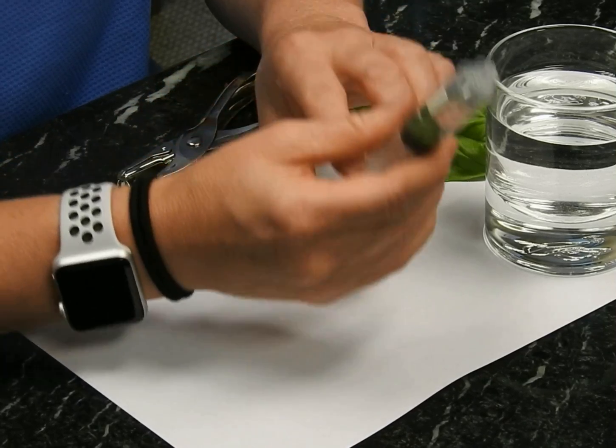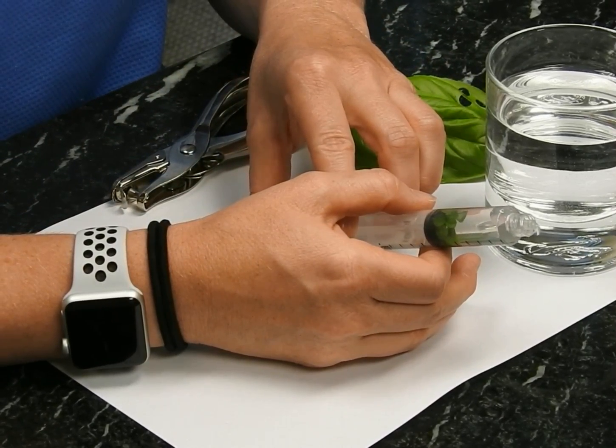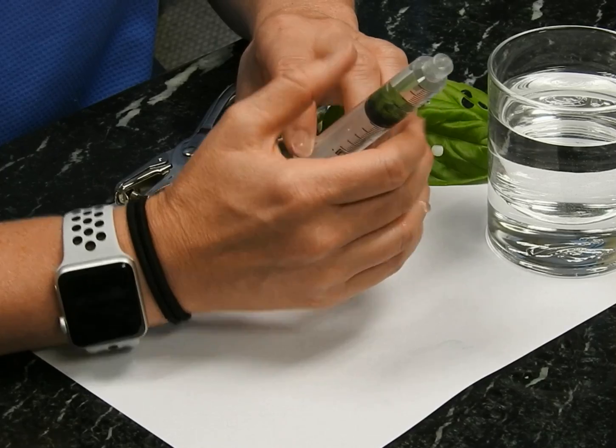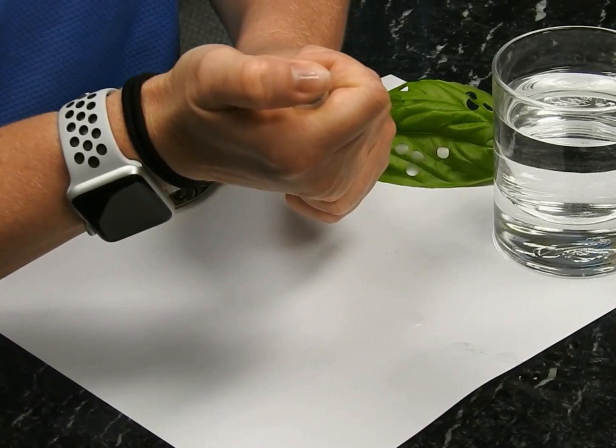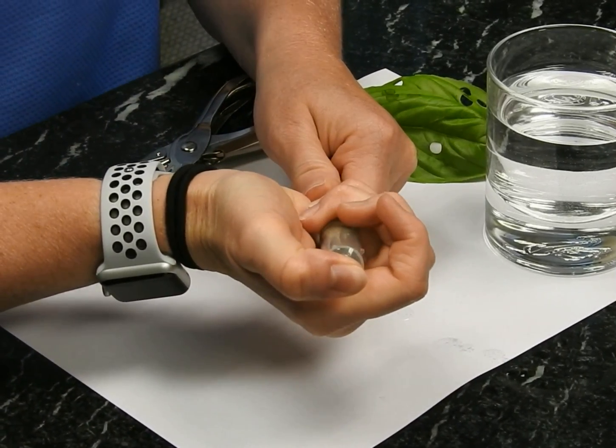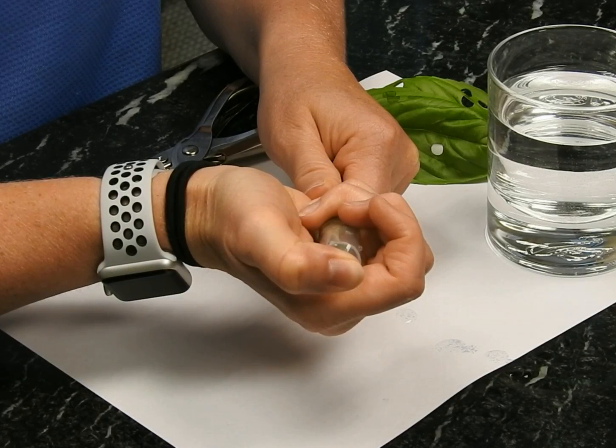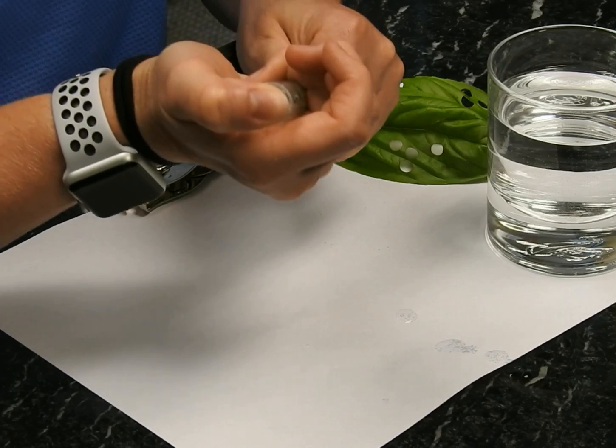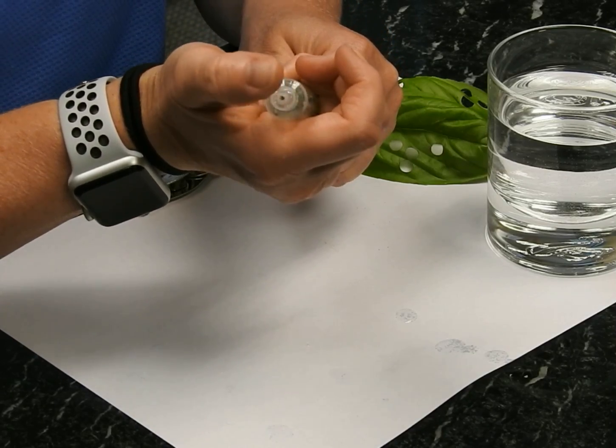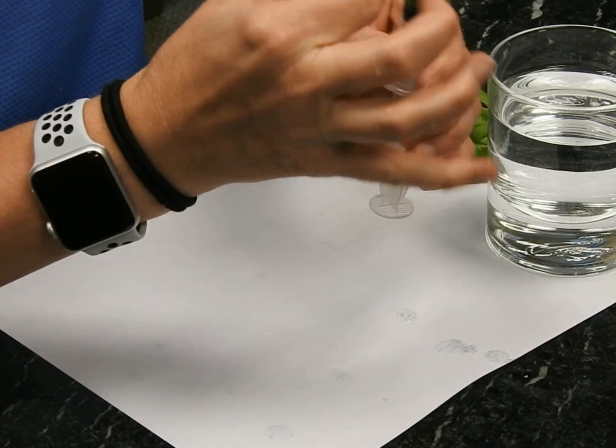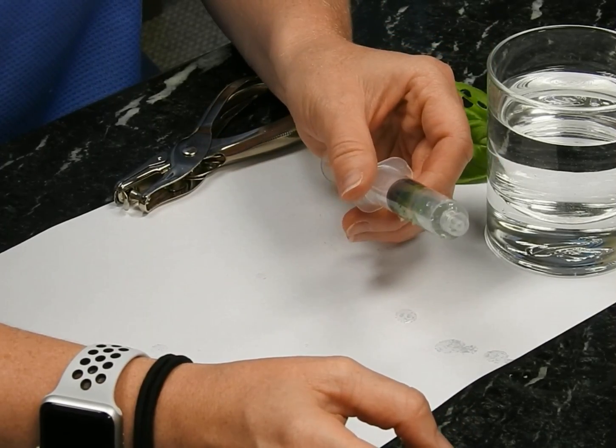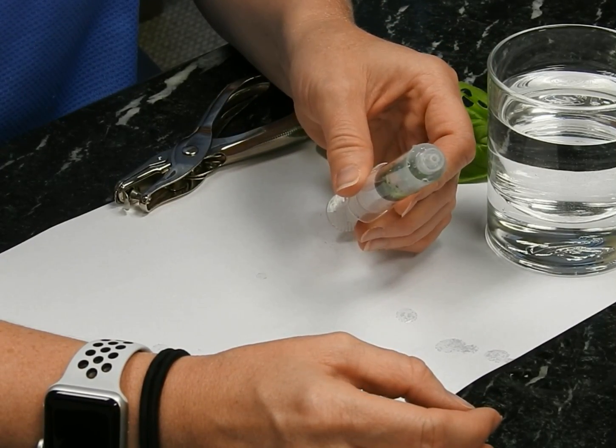Let's repeat the process one more time to ensure we've got a nice vacuum. Swishing around our leaf disks, letting go. Tap, tap, tap. And all of them are now at the bottom.